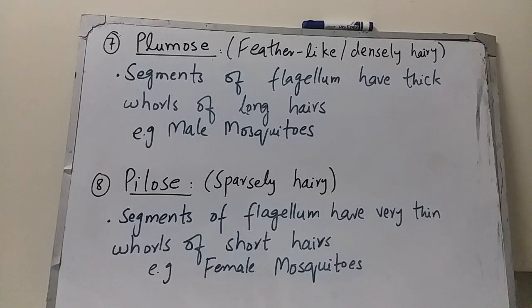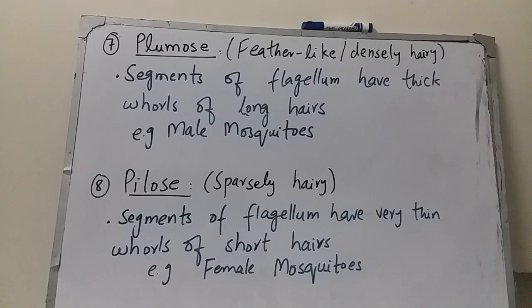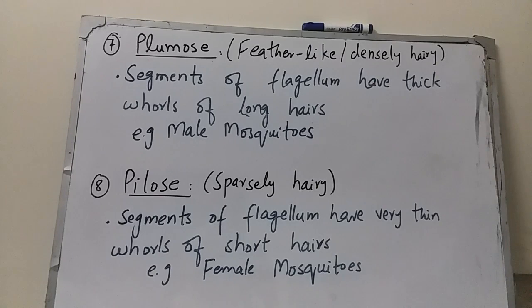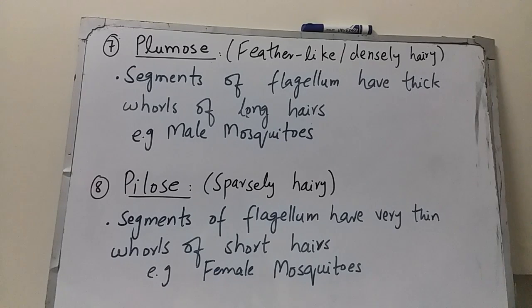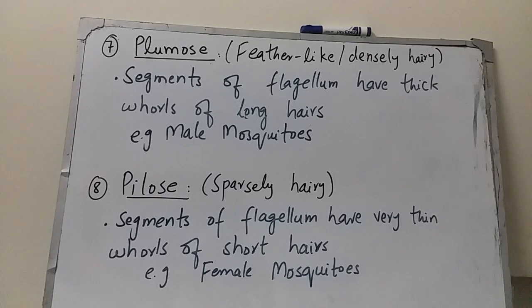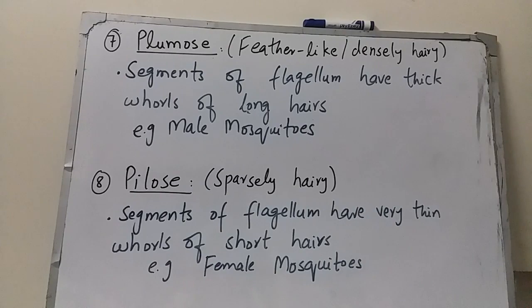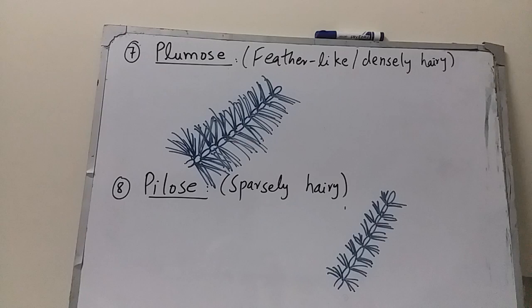The next type is pilose antenna. Pilose means sparsely hairy — less hairy or having small hairs. In pilose antennae, the segments of the flagellum have very thin whorls of short hairs, meaning very few or very small hairs are present on the segments of the flagellum. Pilose antennae are present in all female mosquitoes.